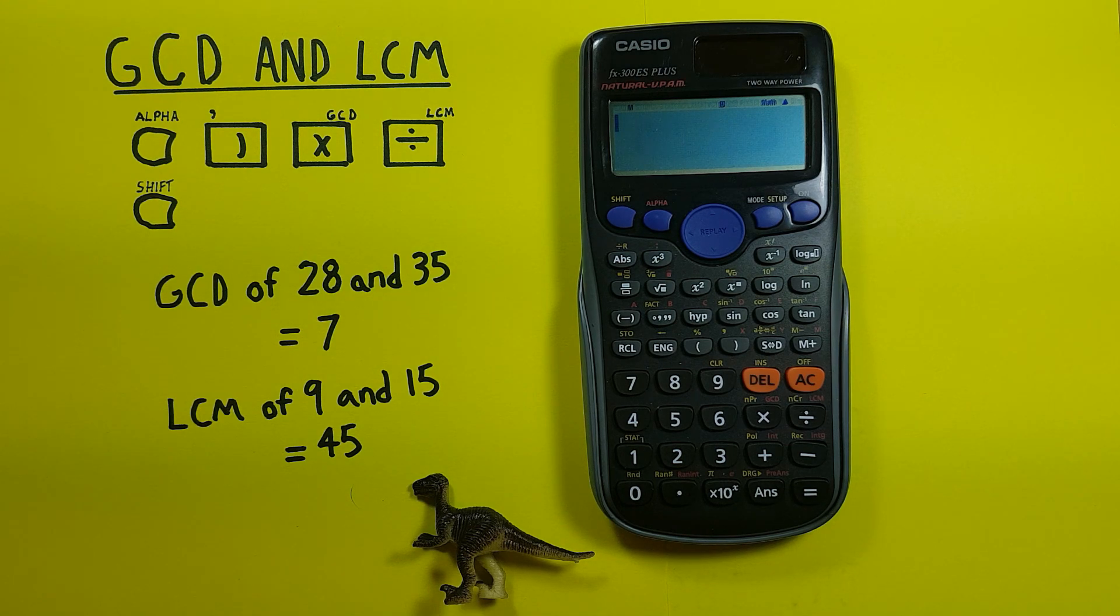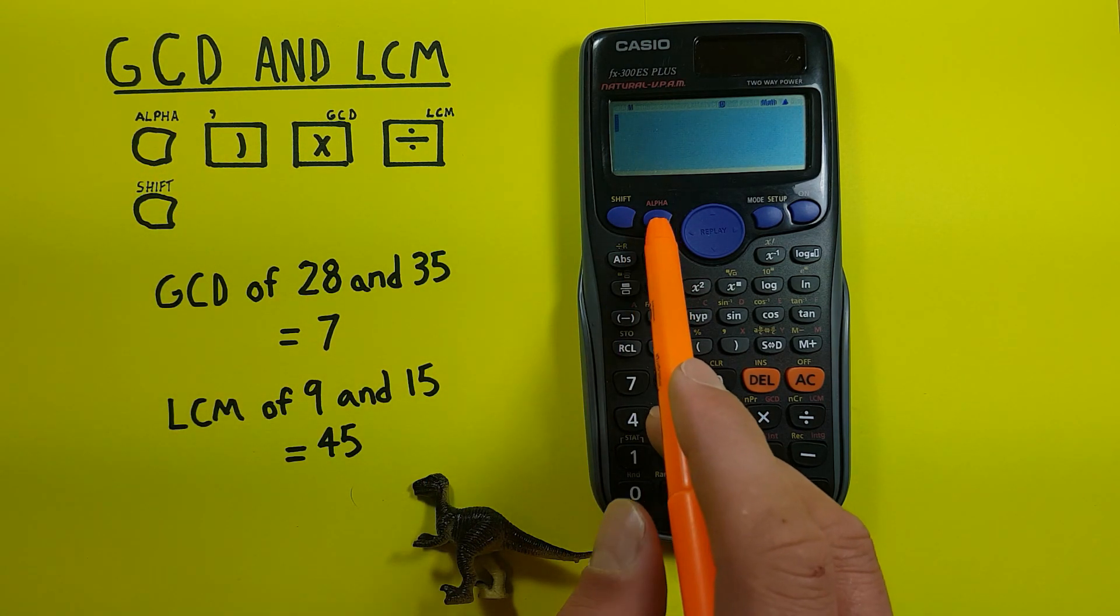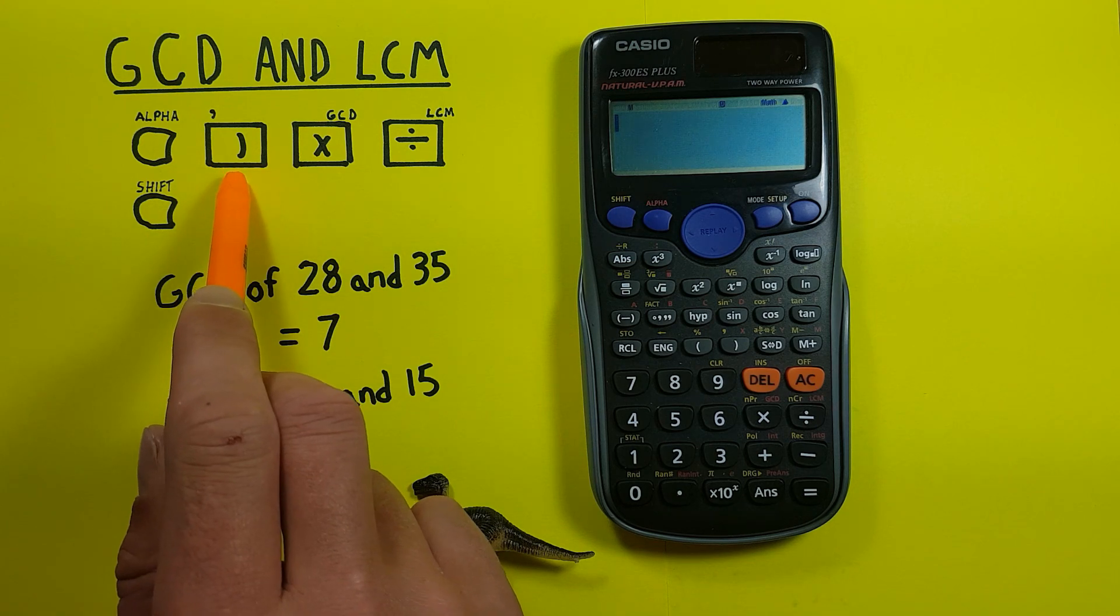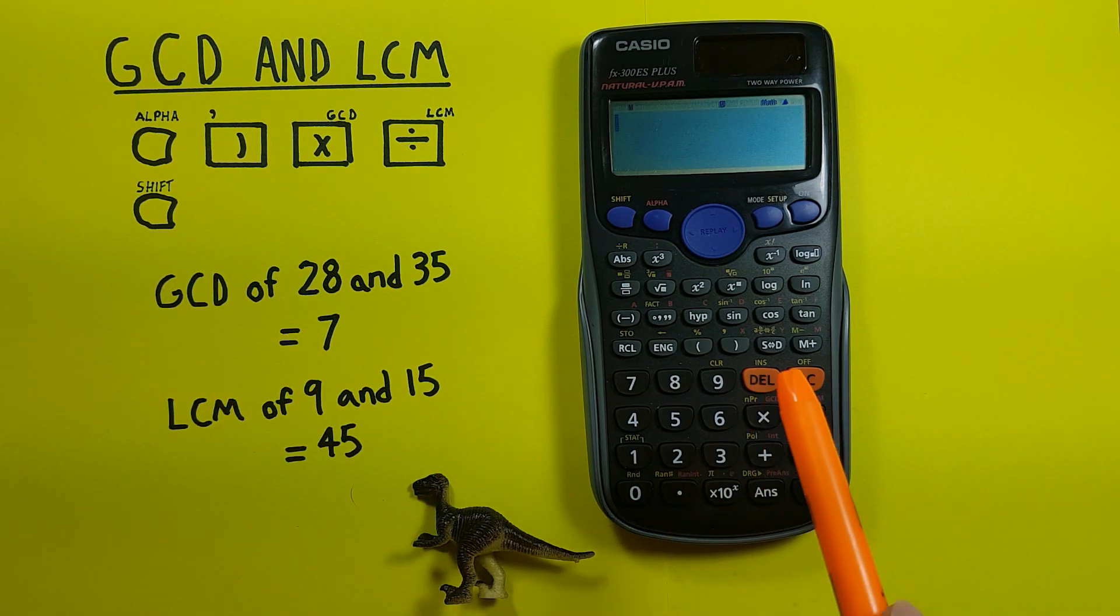To do this we'll be using the alpha key that looks like this located here, the right bracket key that looks like this and is located here,